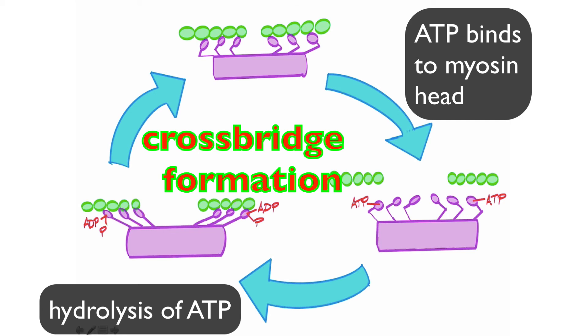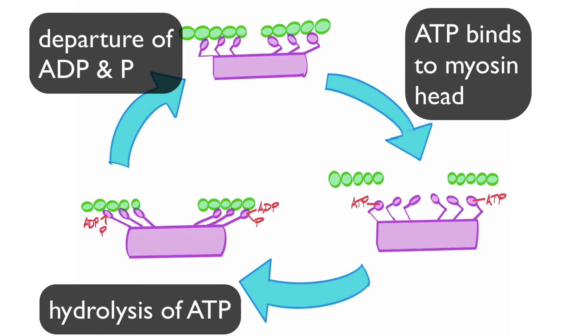And that doesn't occur until ADP and that one phosphate depart from the myosin heads, and that's what results in the power stroke. So here there is no firing of the myosin heads, but we've now fired and that causes this shortening of the muscle fiber, hence the power stroke.